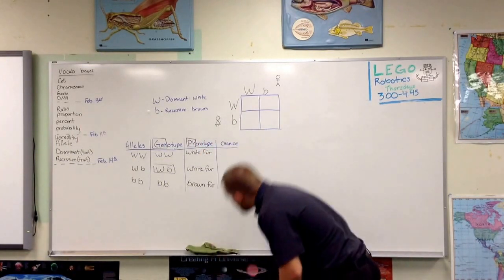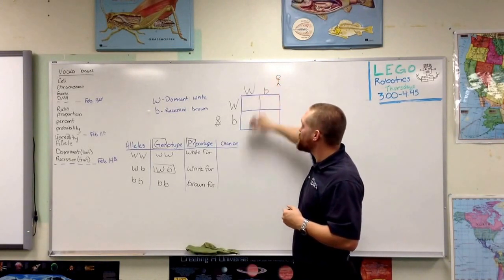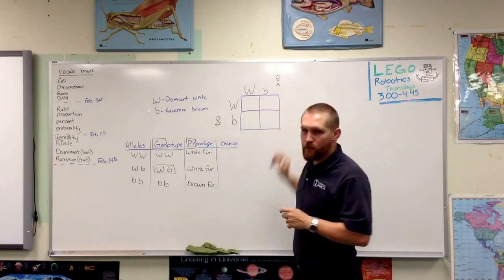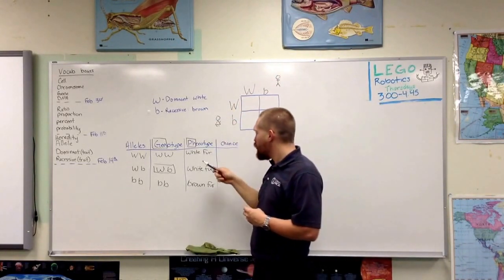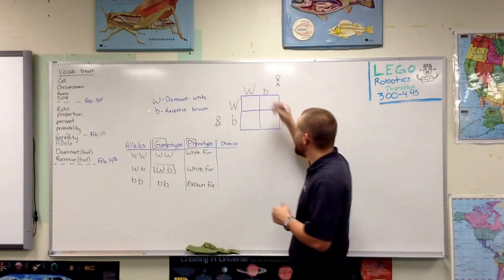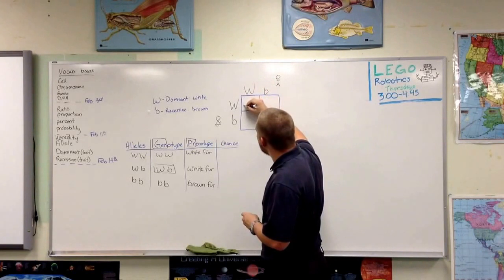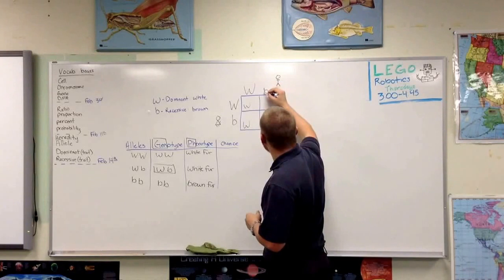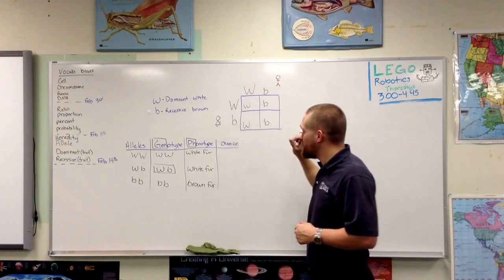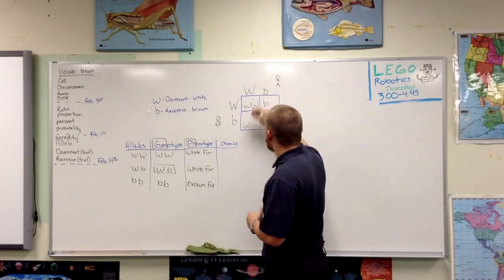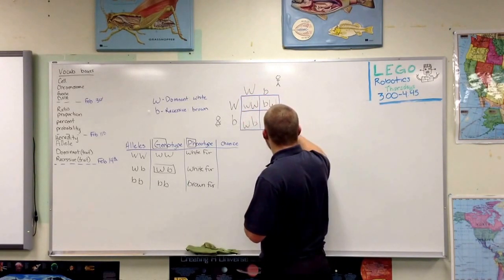Let's fill out our Punnett square. On a Punnett square, I always distribute the top letters down and the letters on the side over to the right. What I'm looking for is: what are the chances of parent one and parent two having either a white fur bunny or a brown fur bunny? So we'll do dad first. Dad could give a dominant gene here or here, and he could give a recessive gene here or here. Now we're going to do mom's genes. Mom could give a dominant gene — distributing here and here — or she'd give a recessive gene and a recessive gene.